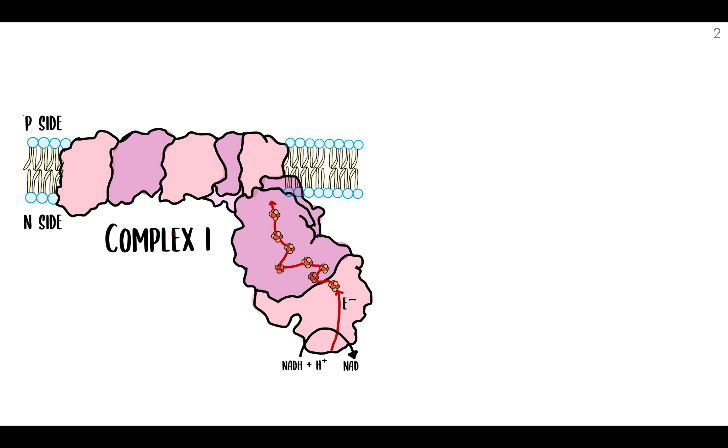Now there are several compounds that inhibit the ETC due to their interactions with iron-sulfur clusters, which is why it's important. So amytal, rotenone, and piericidin A inhibit electrons from flowing from the iron-sulfur clusters of complex one to ubiquinone, and as you can guess this blocks all of oxidative phosphorylation as with no electron flow the next steps in the cycle can't take place.